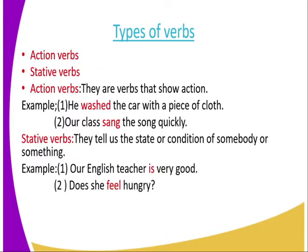We begin with action verbs. From the word action, these are verbs that tend to show action — it means an action was done or performed. For instance: 'He washed the car with a piece of cloth.' The action done in the sentence is washing. Another example: 'Our class sang the song quickly.' What was done by the class? The class did the singing.